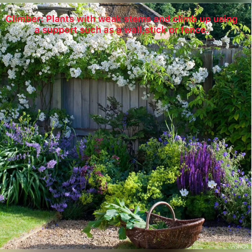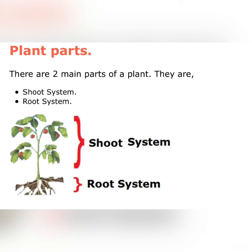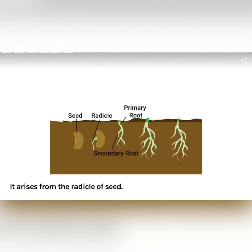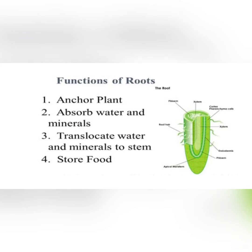A plant can be broadly divided into two systems: root system and shoot system. The part of the plant that remains below the ground is called the root system, and it arises from the radicle of the seed. The root fixes the plant to the soil very firmly and absorbs water and minerals.